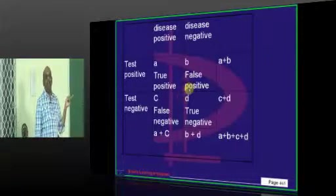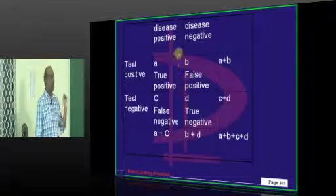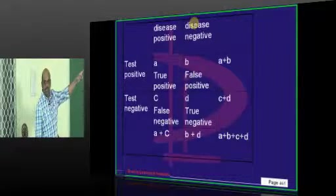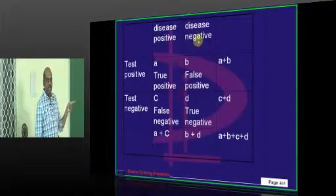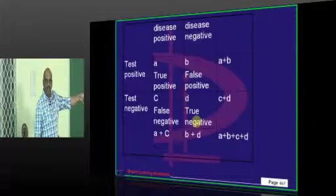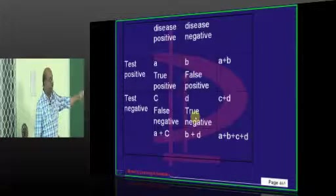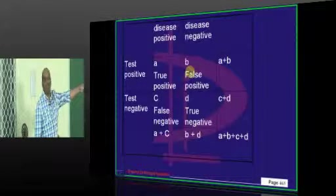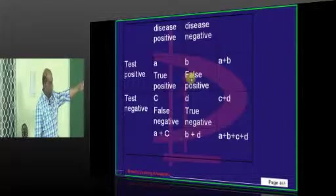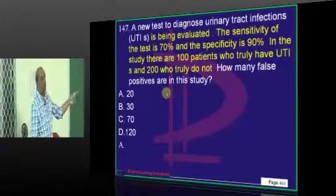To calculate false positives, which value do you require, doctor? All the people who are disease negative and specificity, you have to know. Using that, you calculate true negatives. Once you calculate true negatives, you subtract that from all the people who are disease negative, and that is how you get the false positives. Examiner asks you what false positives only.